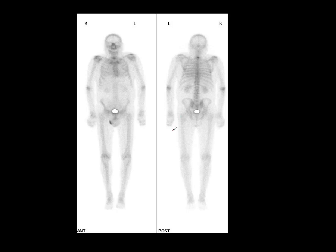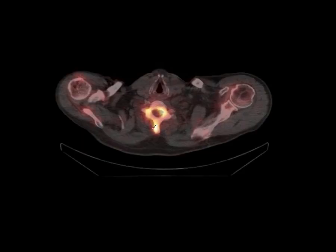When Paget's disease affects the vertebrae, it usually tends to affect the whole vertebra. This patient had a prominent posterior neural arch, so we did a SPECT-CT, which shows diffuse uptake — the classic appearance for Paget's disease. This would be quite unusual for metastatic disease.